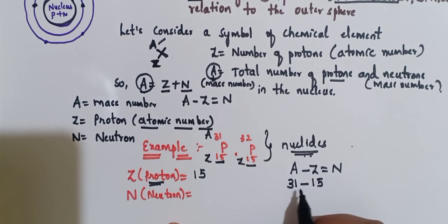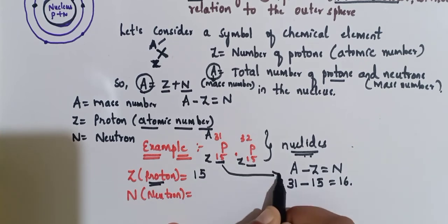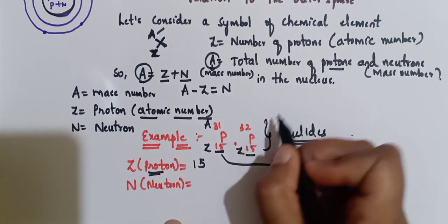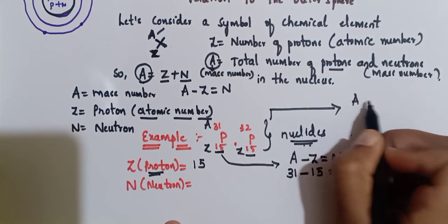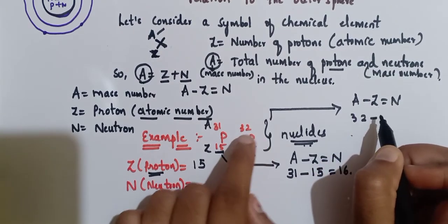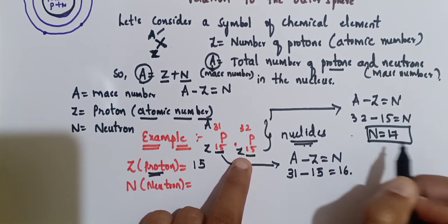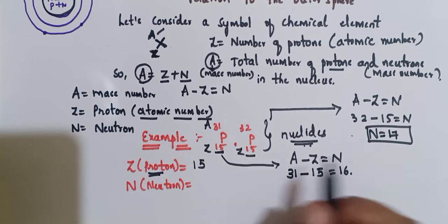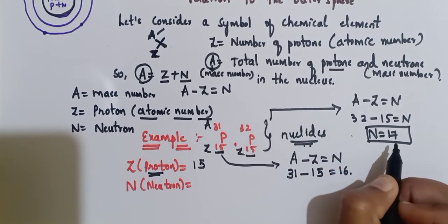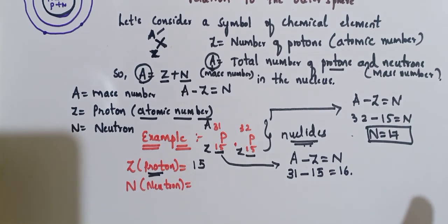For the first nuclide of phosphorus: 31 minus 15 equals 16 neutrons. For the second nuclide: A is 32 minus Z is 15, so N equals 17. The total number of neutrons in the second nuclide of phosphorus is 17. So these are the two nuclides of phosphorus, having 15 protons each and 16 and 17 neutrons respectively. This concludes the introduction to nuclides.